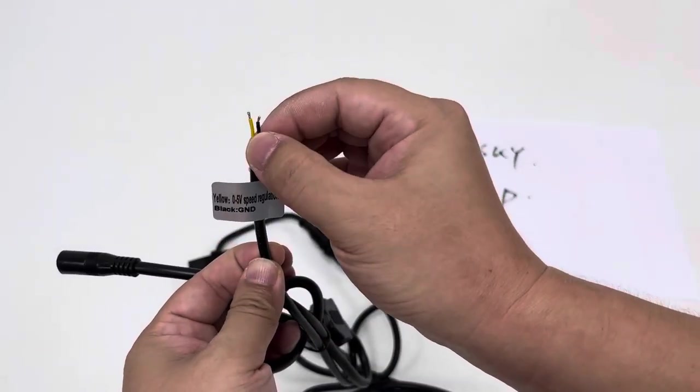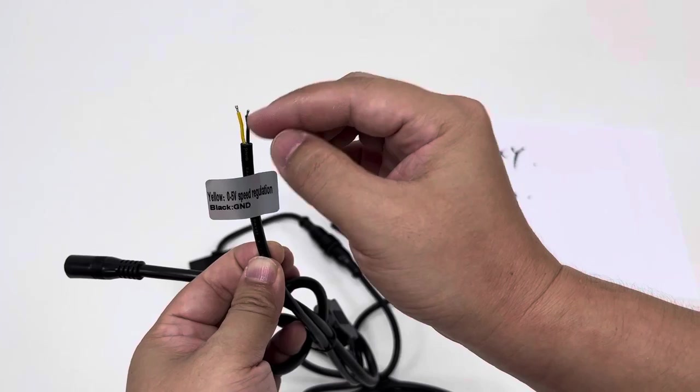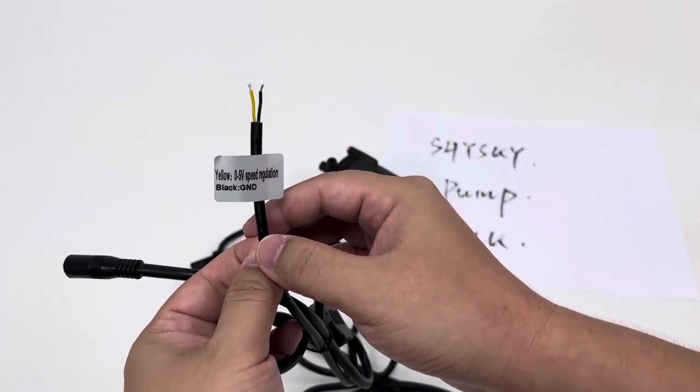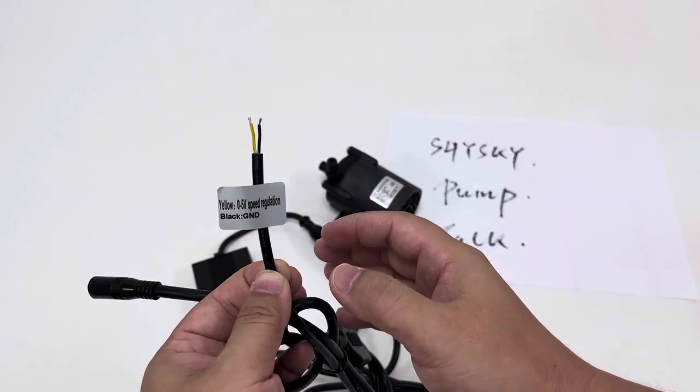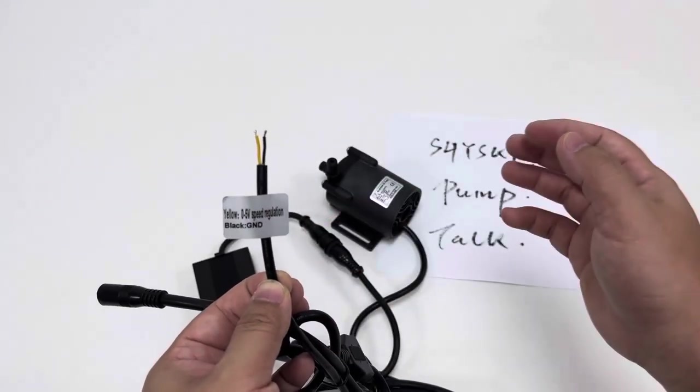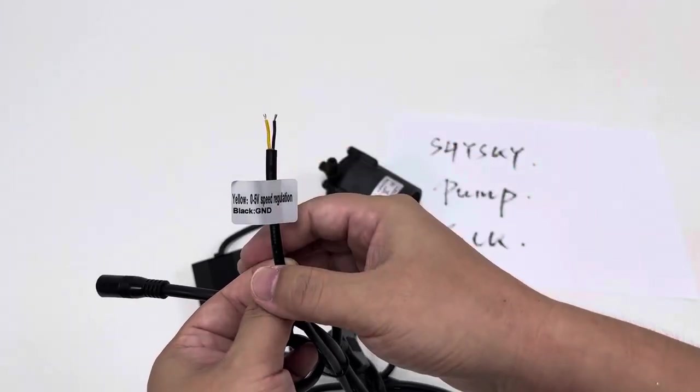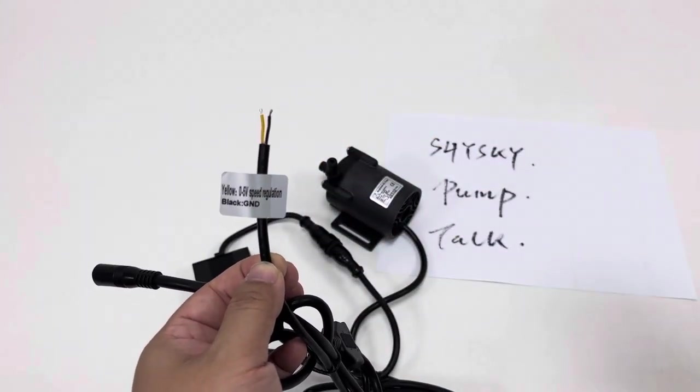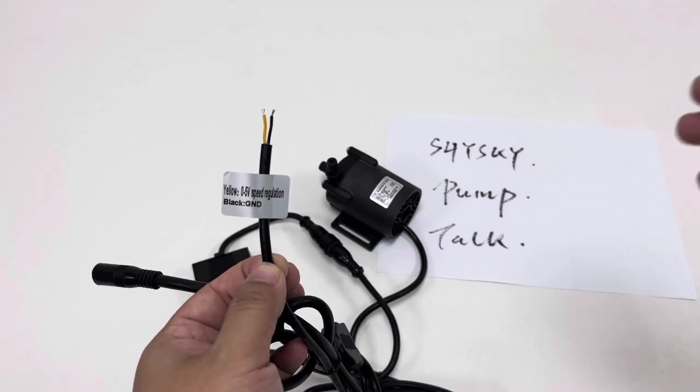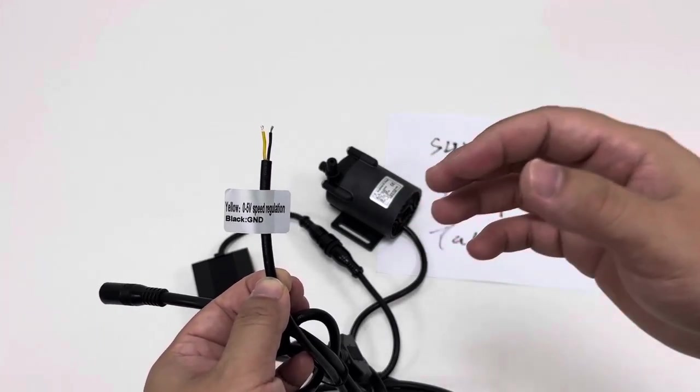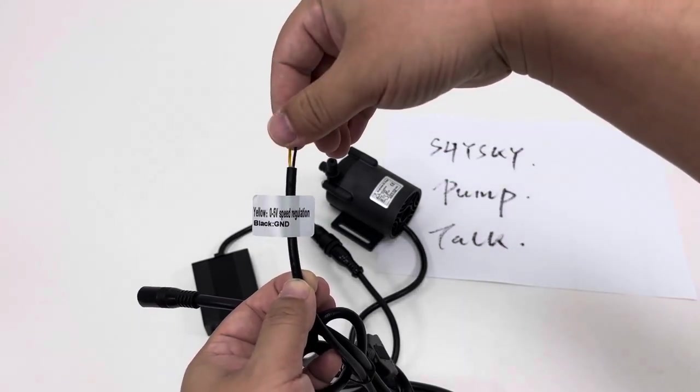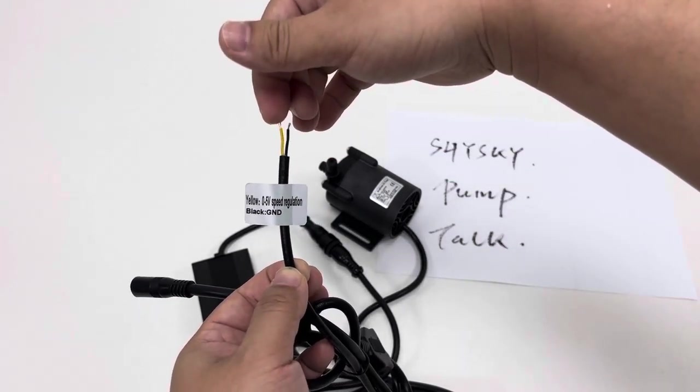There are two sub-cables as we see. This is black, this is yellow. Black is being connected with the GND ground of our system. In the meantime, the yellow connector is being connected with our yellow cable.